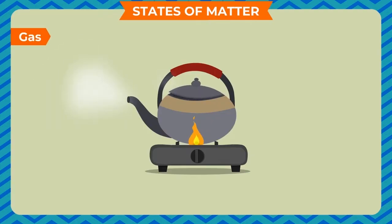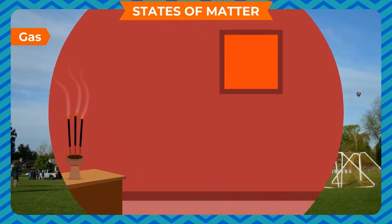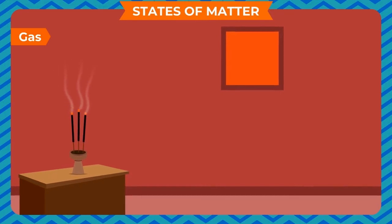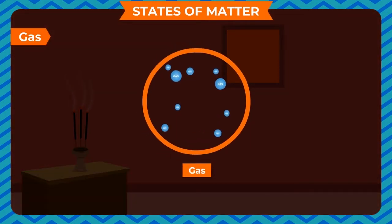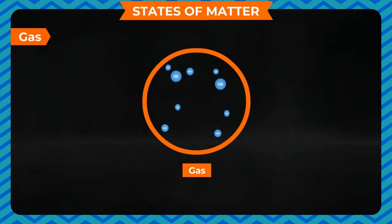Have you seen steam coming out from the spout of a kettle? Steam is a gas. It has no fixed shape or volume. The air around us is also a gas. If we light an agarbatti in one corner of a room, the fragrance spreads quickly all over the room because the molecules of gas are quite loosely packed. They can move freely and can flow easily. The molecules of a gas have much greater spaces between them — they are not closely packed but spread out in all directions.